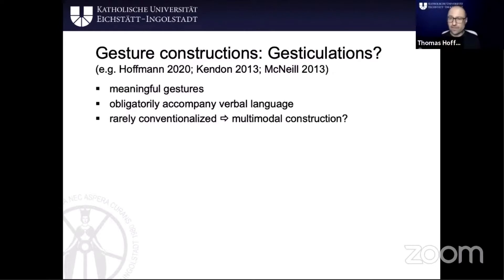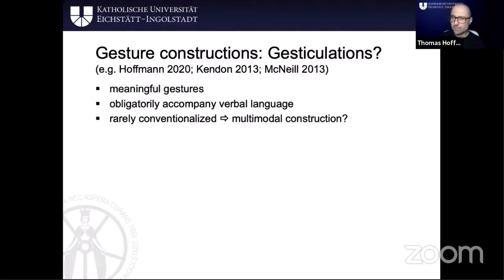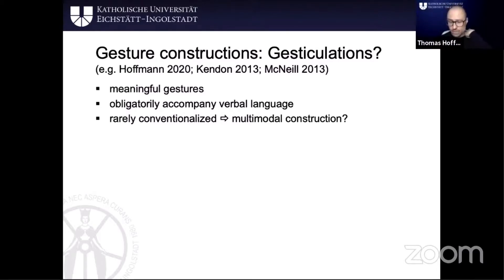If they were conventionalized, then it would be a multimodal construction. The shrug is an example — Alan Schenke has worked on this and noted that very often people say 'I don't know' with a shoulder shrug that accompanies it. And if that always happens or very often, then it's going to be tied into a multimodal construction. But many gesticulations are not.